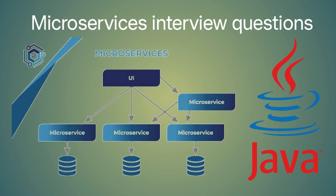How do you design microservices to be fault-tolerant and handle failures gracefully? To design fault-tolerant microservices, you can use techniques like circuit breakers, bulkheads, and timeouts. You can also design microservices to be stateless and idempotent so that they can recover from failures quickly.